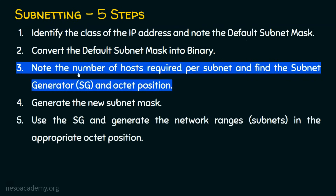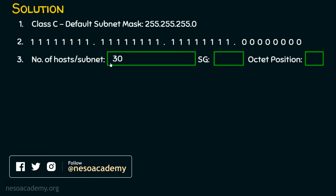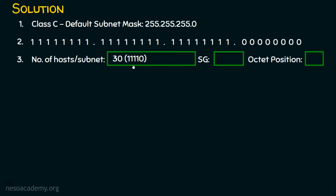Step three: note the number of hosts required per subnet — which is 30 — and find the subnet generator and the octet position. To find the subnet generator, convert 30 into binary: 11110, which is 16+8+4+2=30. We cannot represent the number 30 without 5 bits. Always start with 1 — don't prefix zeros. So 5 bits are compulsorily required to represent the number 30.